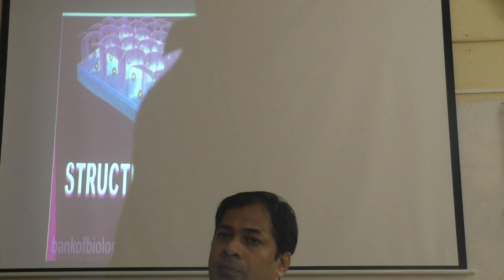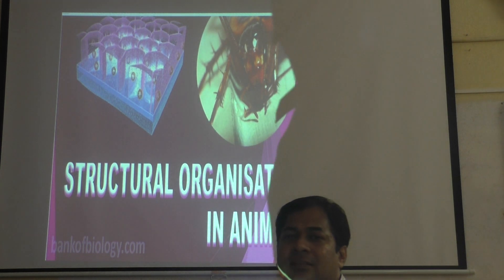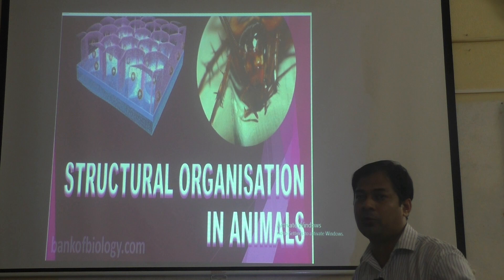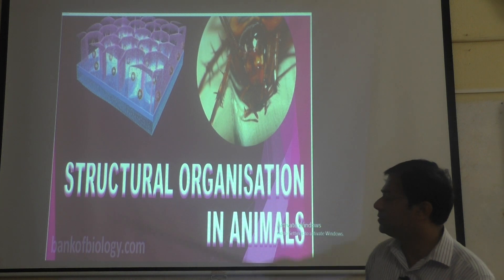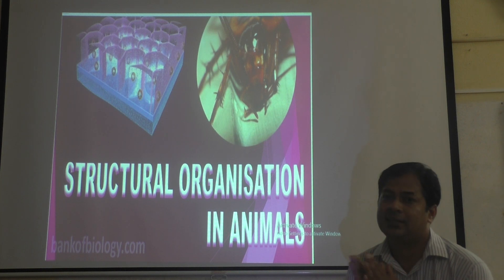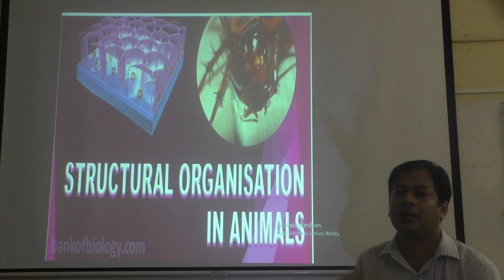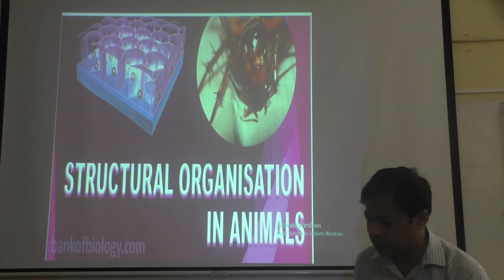Today we are going to learn a new chapter: Structural Organization in Animals. This is the last chapter I have to teach in the retained portion. Structural organization in animals means how the body of the organism is designed — what all parts are there inside the body, how cells are arranged and organized, what are the different types of tissues, what is the morphology and internal anatomy of the body.